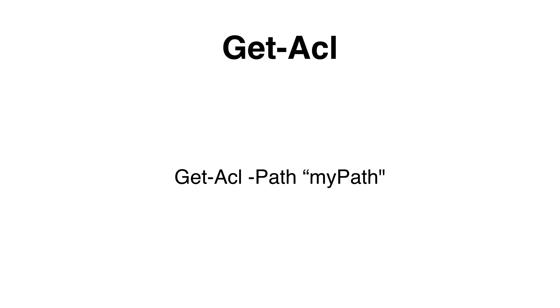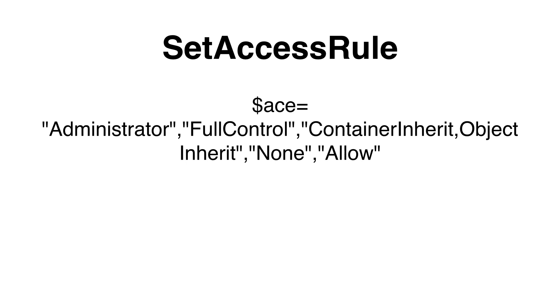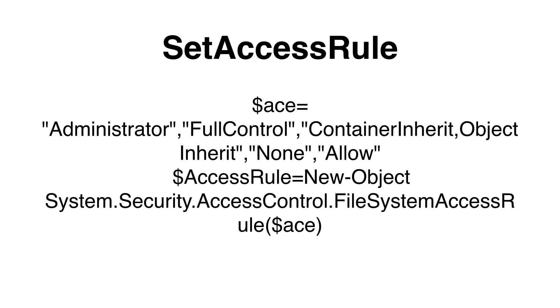To get access control list information for a directory we can use the Get-ACL commandlet and specify the path parameter — so it's Get-ACL, path, and then the path to the file or folder. If we want to set ACLs, the first thing we need to do is set an access rule. We need to create a variable array with the following: the identity — in this case the administrator; the file rights, set to full control; the inheritance flag, set to container inherit and object inherit; the propagation flag, set to none; and the ACE type, set to allow. Then we use New-Object to create a System.Security.AccessControl.FileSystemAccessRule from our array variable.